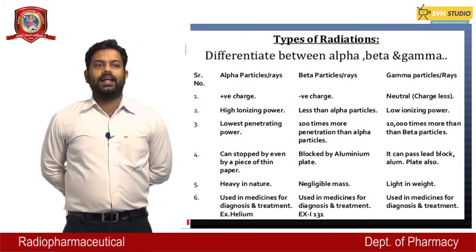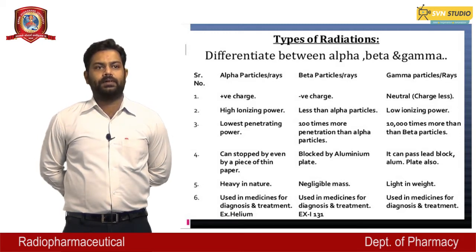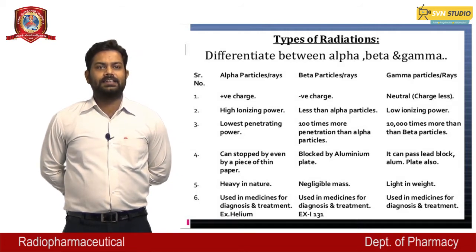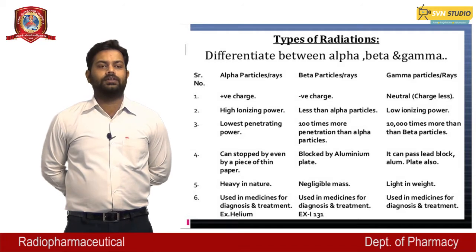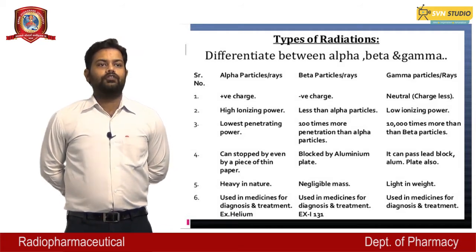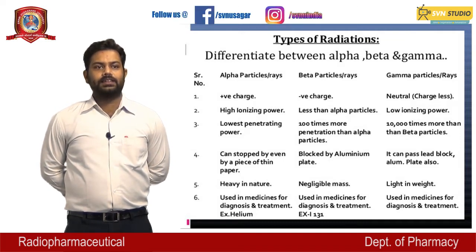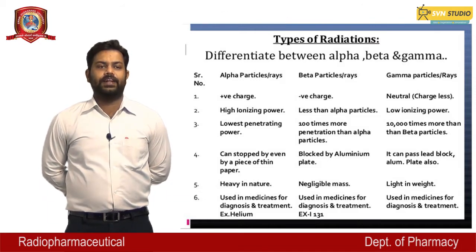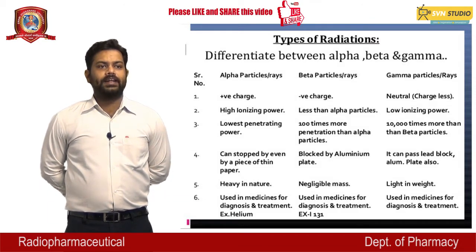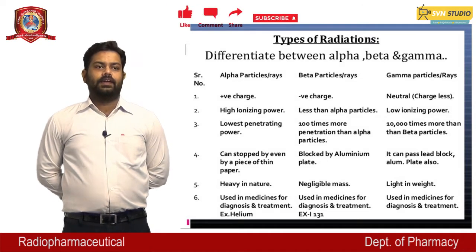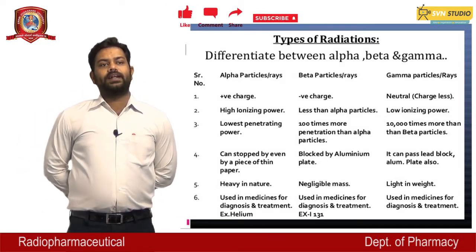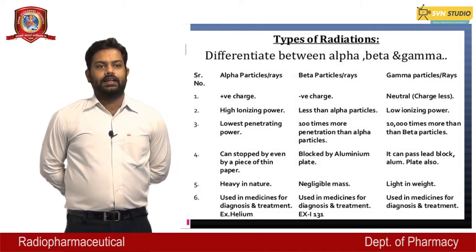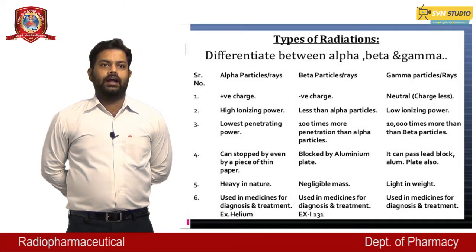Alpha particles can be stopped by even a thin piece of paper; beta particles can be blocked by an aluminum plate; gamma particles can pass through lead blocks and aluminum plates. Alpha particles are heavy in nature; beta particles have negligible mass; gamma particles are light in weight. Alpha particles are used in medicine for diagnosis and treatment (e.g., helium); beta particles (e.g., I-131); gamma particles are similarly used in diagnosis and treatment.